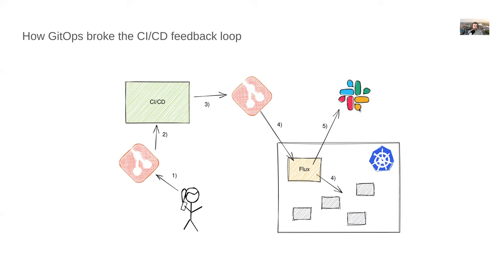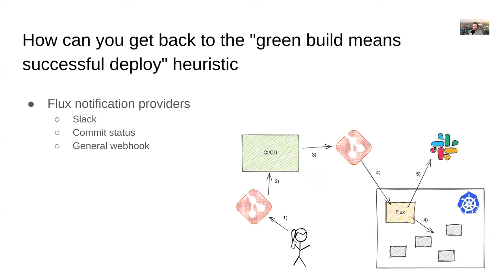Flux has a Slack notification provider so in your chat you can tell whether the deploy succeeded or not. It's also able to set commit statuses back on the GitOps repository, so on the GitHub commit you'd see a green tick. But the problem is: you as a developer push your code, look at the CI build, and once it pushed the change to the GitOps repo it's done and green — you've lost the ability to tell whether your deploy is done.